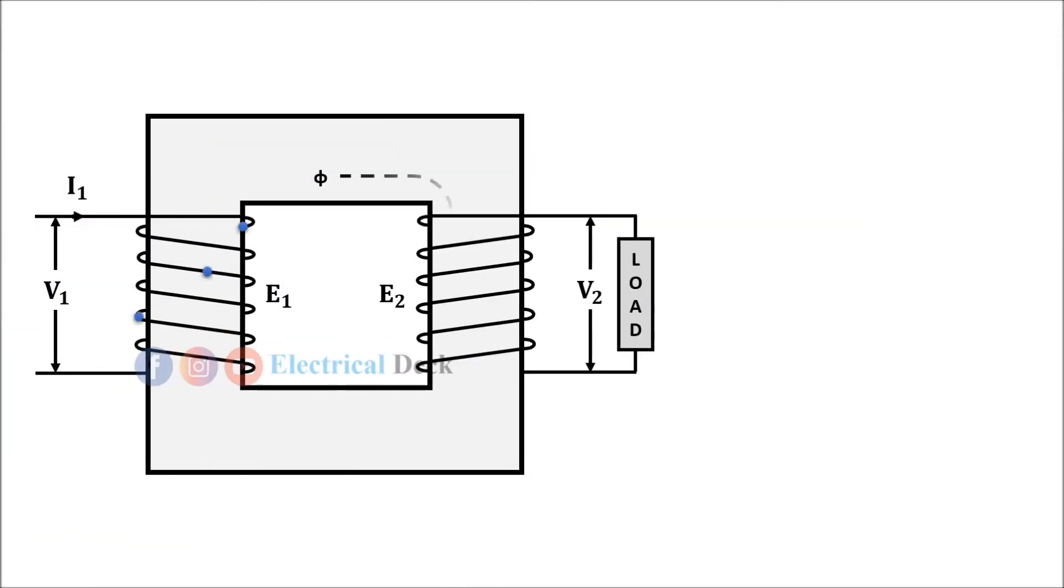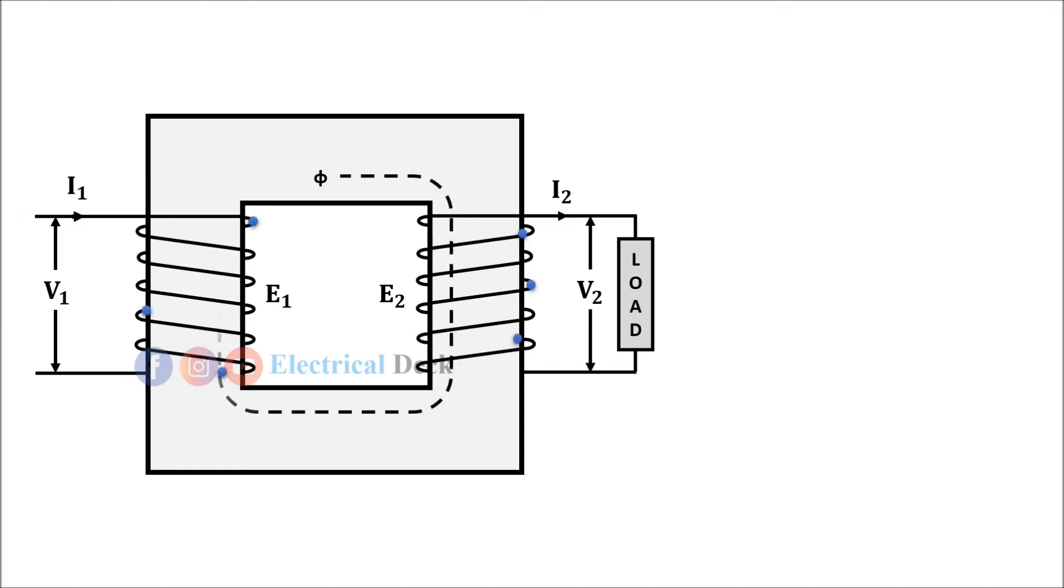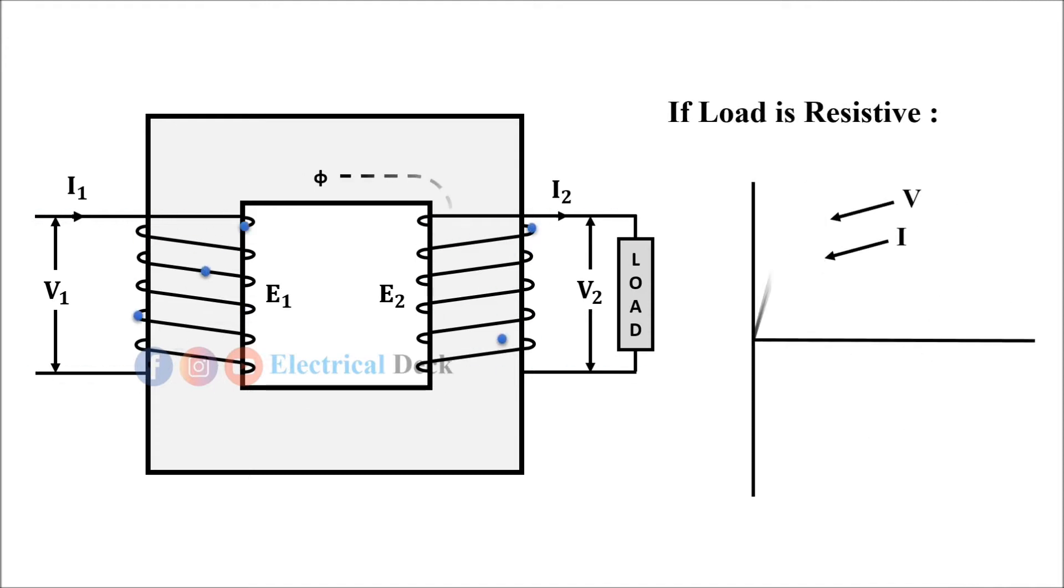When the transformer is loaded, the current I₂ flows through the secondary winding. The magnitude and phase of I₂ is determined by the nature of the load. If load is inductive, the current I₂ lags the voltage V₂. If load is capacitive, the current I₂ leads the voltage V₂, while for resistive load, I₂ is in phase with V₂.